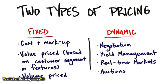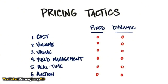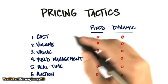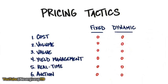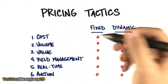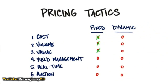There's another type: dynamic pricing, where prices move. Negotiated prices are a form of dynamic pricing — the listed price is just the starting point of a conversation. Airlines use yield management: a month before a flight seats might be $500; a week before, $600; an hour before they might drop to $99 because empty seats generate no revenue. Real-time markets like the stock market and auctions like eBay are also examples of dynamic pricing. The first three — cost-based, value-based, and volume-based pricing — are fixed; yield management, real-time markets, and auctions are dynamic.